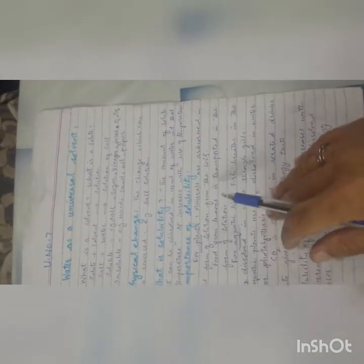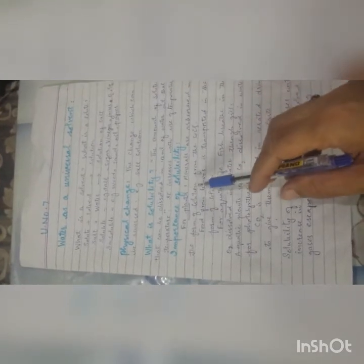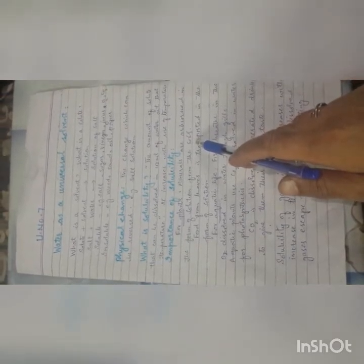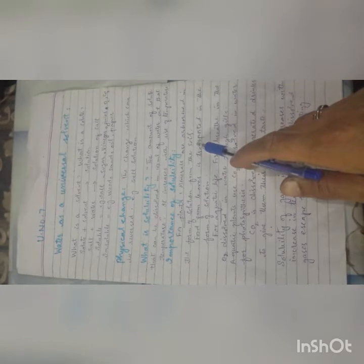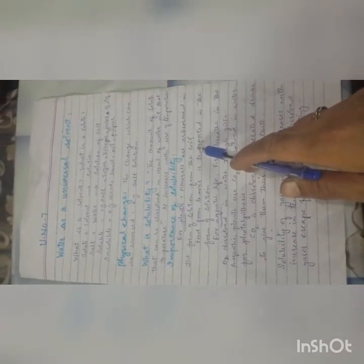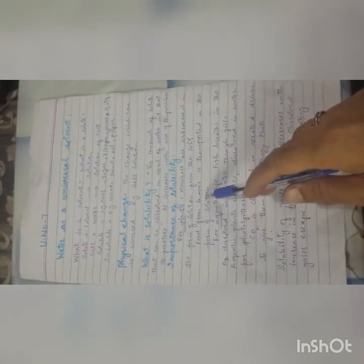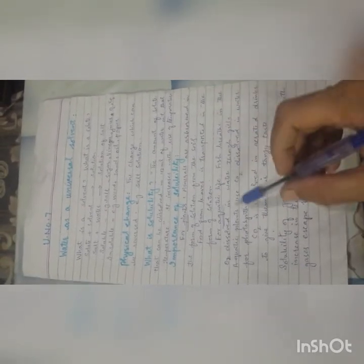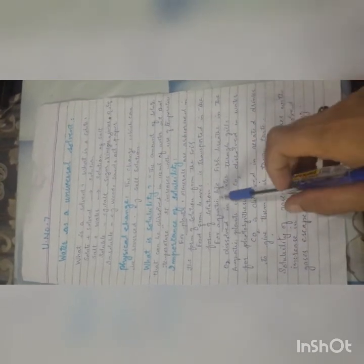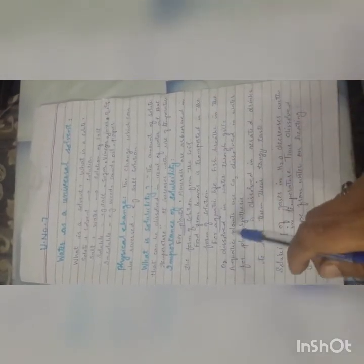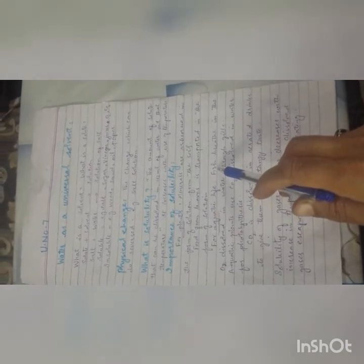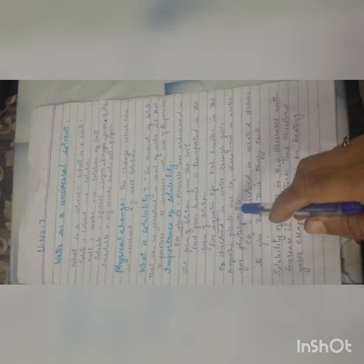Now let's look at the importance of solubility. Solubility is a very important phenomenon. For example, for plants, minerals are absorbed in the form of solution from the soil. If salts are not in solution form with water, roots cannot absorb them. Similarly, food from the leaves made by photosynthesis cannot be transported to other parts of the plant if it is not converted into solution form. For aquatic life, fish breathe in the oxygen dissolved in the water through their gills. If oxygen is not dissolved in water, they cannot breathe.